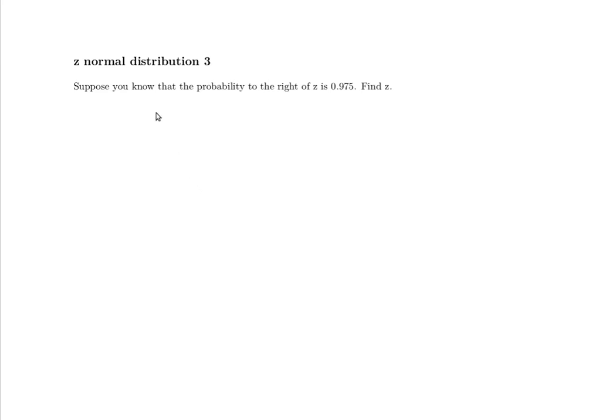This is a problem proposed in one of Catherine Cossack's videos. Suppose you know that the probability to the right of a Z value is 0.975. Then find what that Z value is.